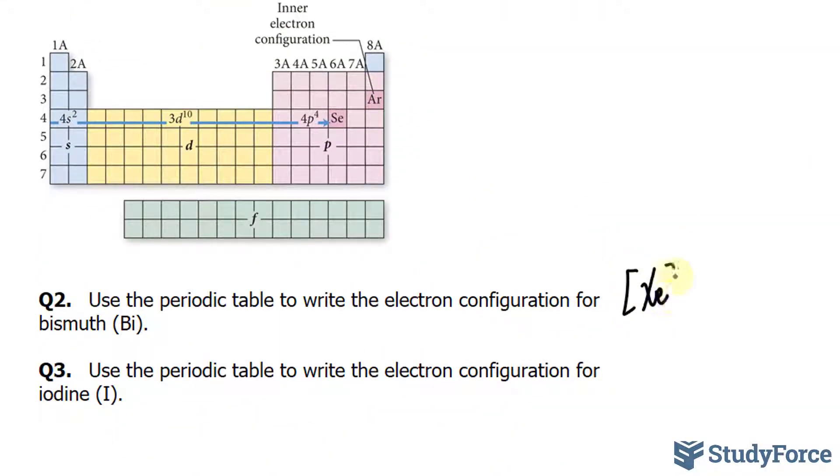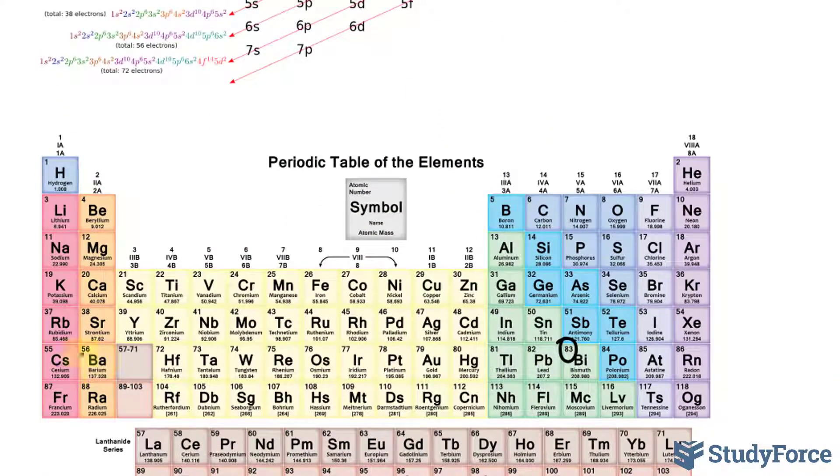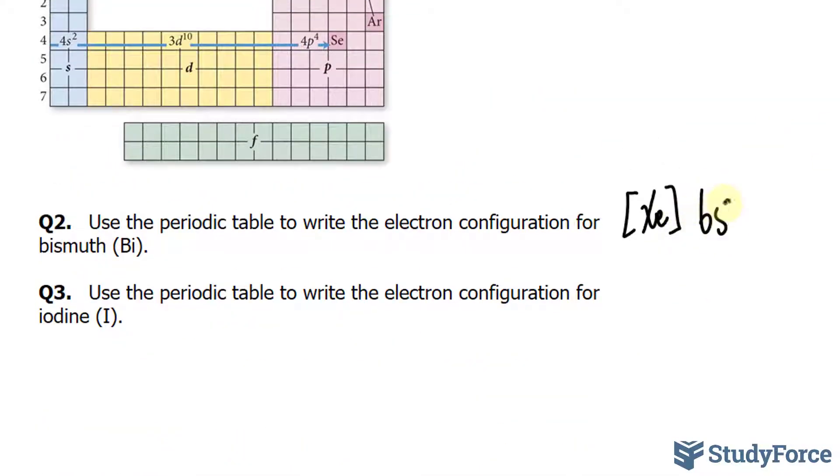We have xenon, and if you go back to this, bismuth is found in the 6th row. These 2 electrons are filled in—that's 6S2. Let's write that down: 6S2.